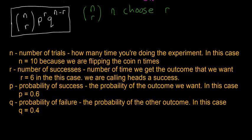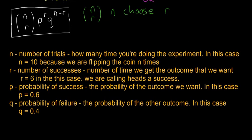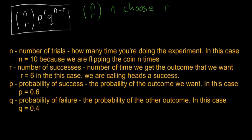So in this case, n is the number of trials in the experiment, how many times we're doing the experiment. So for our coin toss example, n is equal to 10 because we're flipping the coin 10 times.